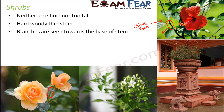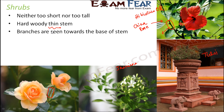In shrubs, branches are seen towards the base of the stem, and as the plant grows, more and more branches appear towards the base. Examples of shrubs include rose, hibiscus (also known as China rose), tulsi (considered a sacred plant in India, also called basil), and jasmine. These plants are not very big or very small, but they have a hard, woody, thin stem — and that thin stem is what makes them different from trees.